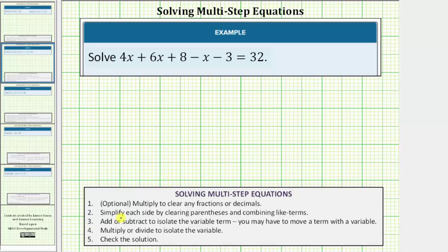Step two: we simplify each side by clearing parentheses and combining like terms. We don't have any parentheses, but we do have like terms on the left side of the equation. Notice we have three x terms and two constant terms.